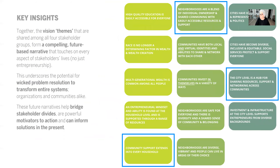These blue boxes show how different vision themes emerged and extended up systems levels, manifesting in different ways at different levels of scale. Here we see a theme related to the strength of community and the sharing of resources emerging at the household, neighborhood, and city levels.